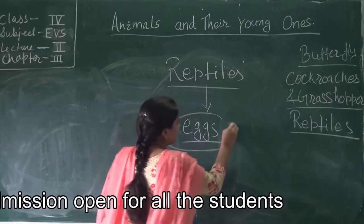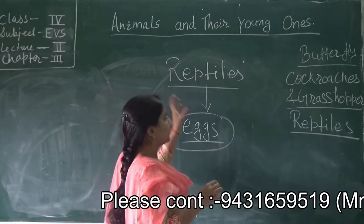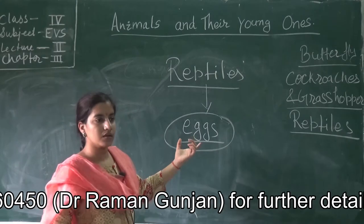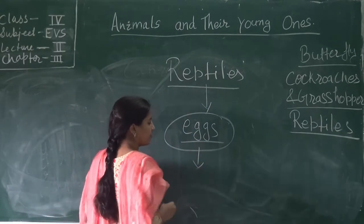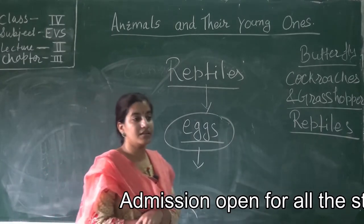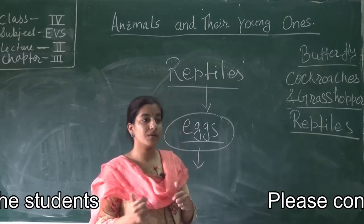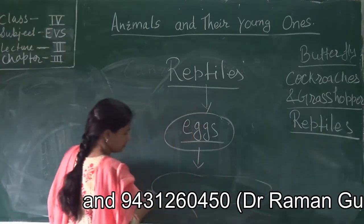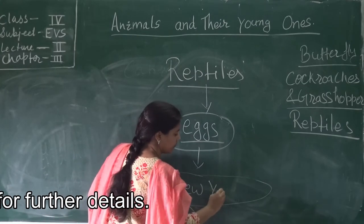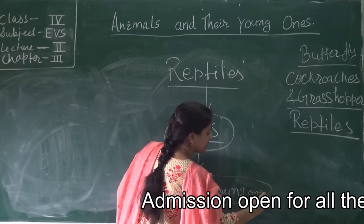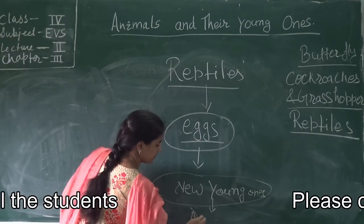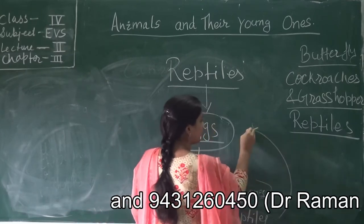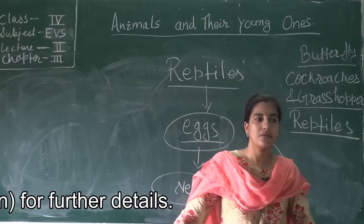This is the life cycle of reptiles. Reptiles like snake and lizard lay eggs on the ground. After proper incubation — proper conditions, proper temperature, proper warmness coming from the sun — the new young ones come out from that particular egg and then become adults. Then again this reptile lays eggs and this is a continuous process. This is the life cycle of reptiles.